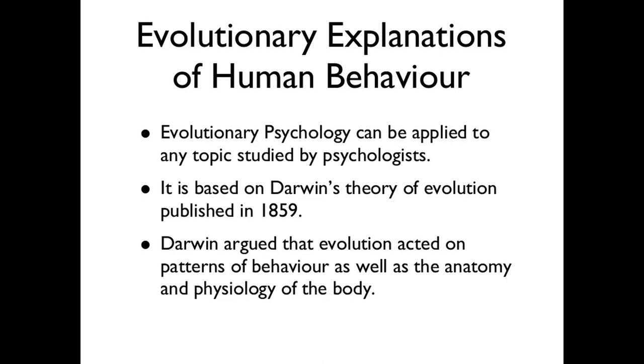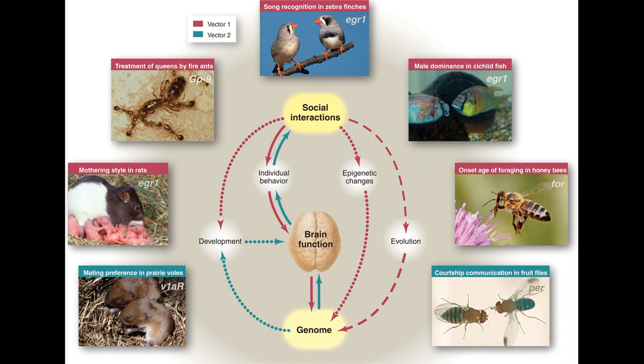Well, that gets us into evolutionary psychology, a thorough discussion of which would take us too far afield for today's purposes. So, to conclude this tale, there are many behaviors that have genetic underpinnings, and in some cases, researchers have been able to trace the developmental and evolutionary histories of those behaviors. The reach of the gene can extend far beyond the body. Thanks for watching, and I'll see you next time.